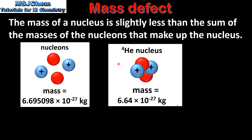Here we have a helium nucleus which is composed of two protons and two neutrons, and here we have the mass of the nucleus. On the left we have the nucleons that make up a helium nucleus — two protons and two neutrons — and here we have the mass of the four nucleons. Comparing the masses, the mass of the helium nucleus is slightly less than the mass of the four nucleons that make up the helium nucleus.